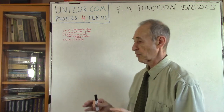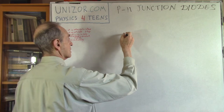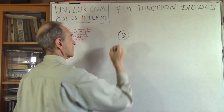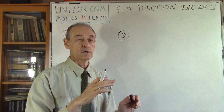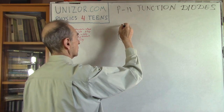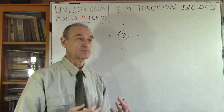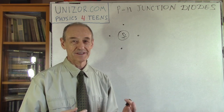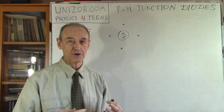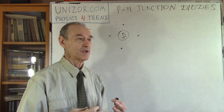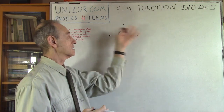Let me start with a brief review of what semiconductors are. Consider the atom of silicon. The atom of silicon has a certain number of electrons, but we are concerned only with electrons on the outer orbit, called valence electrons — and there are four of them. Atoms are trying to have eight electrons on their outer orbit, but right now the outer orbit contains only four.